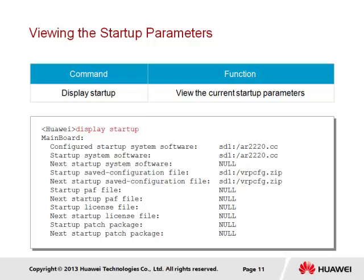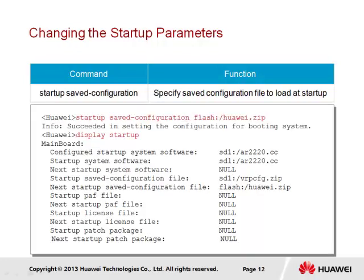The current VRP image being used is represented by the startup system's software output. In cases where the configuration file to be used is different from the default saved configuration file, the startup saved configuration command can be used. The saved configuration file may be a file that has been either saved on the local device under a different filename to the default saved configuration file name of vrpcfg.zip, or may have been retrieved from a remote location and stored on the device. We see here the startup saved configuration file to be used has been saved to the flash storage location with the filename of huawei. Following configuration, we can again use the display startup command to confirm the changes. Since the router in this case has not yet been reloaded, the current startup configuration file is shown to be the current configuration file; however, we can now also see that following the next startup, the new huawei configuration file will be applied.